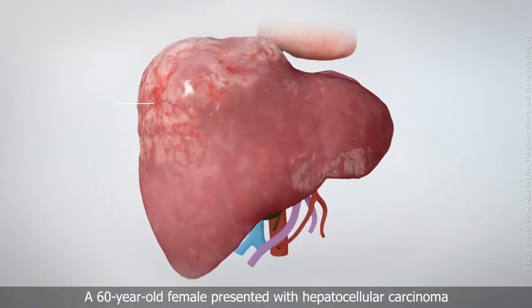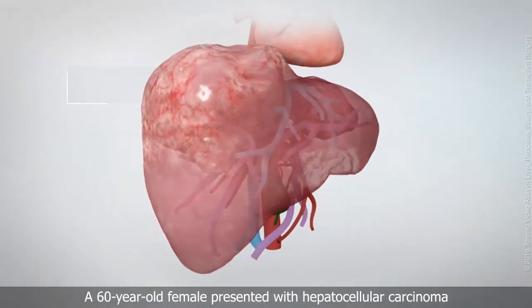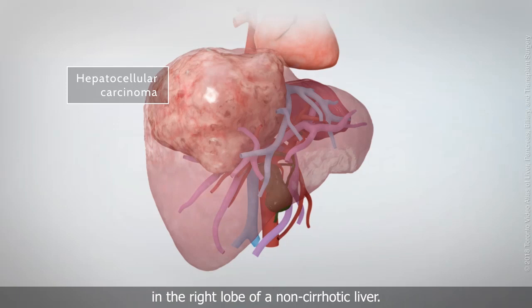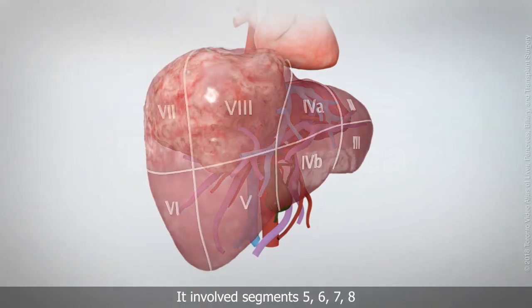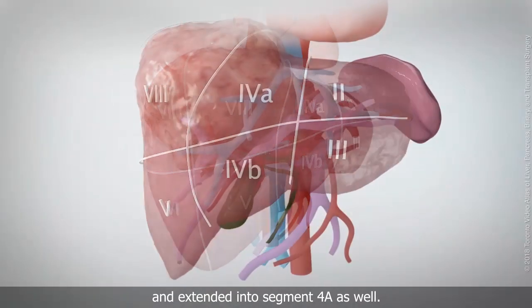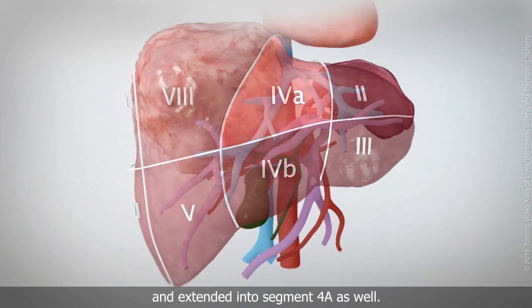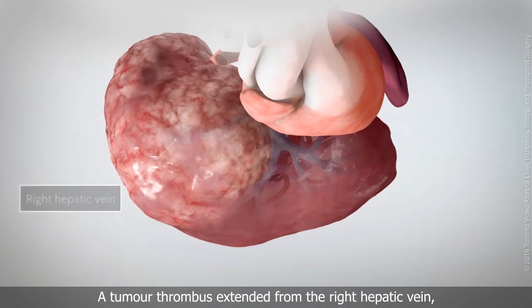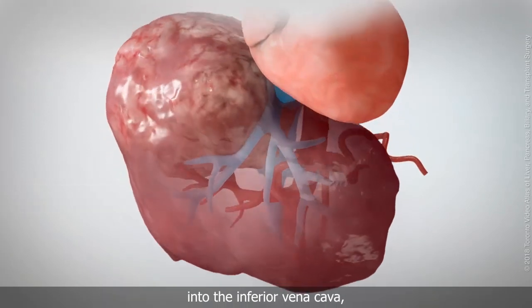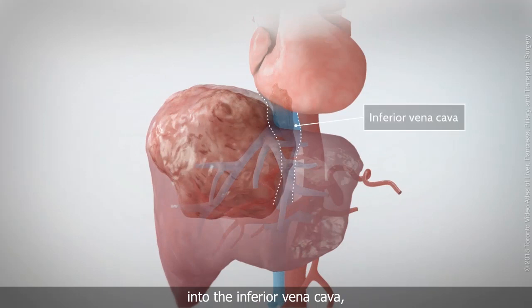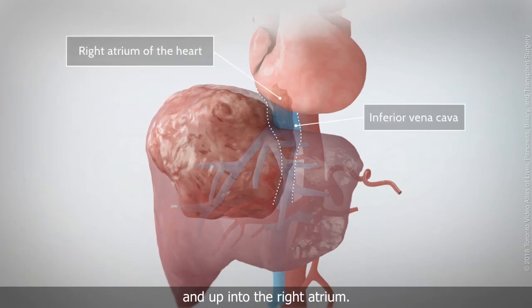A 60-year-old female presented with hepatocellular carcinoma in the right lobe of a non-cirrhotic liver. It involved segments 5, 6, 7, and 8, and extended into segment 4A as well. A tumor thrombus extended from the right hepatic vein into the inferior vena cava and up into the right atrium.